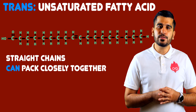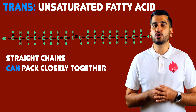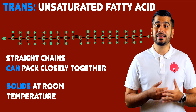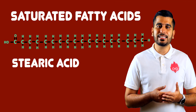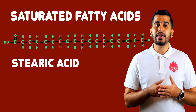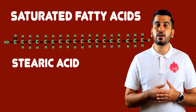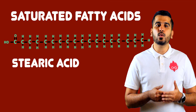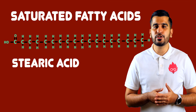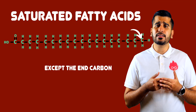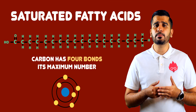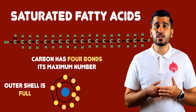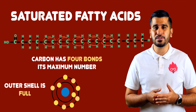In the trans form, however, the chains tend to be straighter and therefore resemble properties seen in saturated fatty acids. In saturated fatty acids, each carbon atom in the hydrocarbon chain is linked to a carbon atom on either side and also to two hydrogen atoms. This means that the carbon atoms have the maximum number of bonds. Therefore, saturated fatty acids only have single carbon-to-carbon bonds.